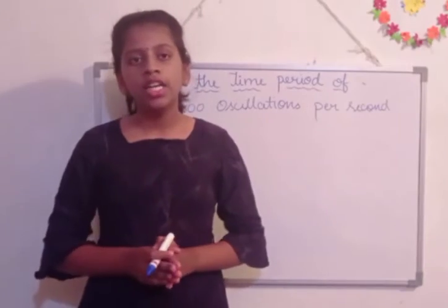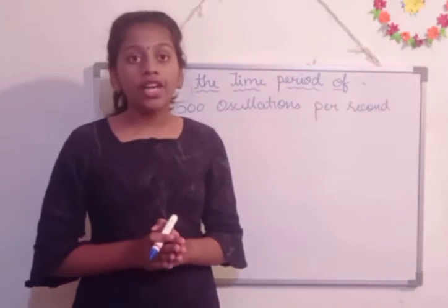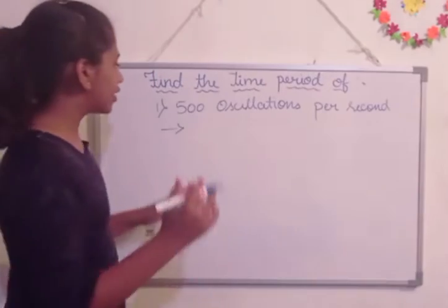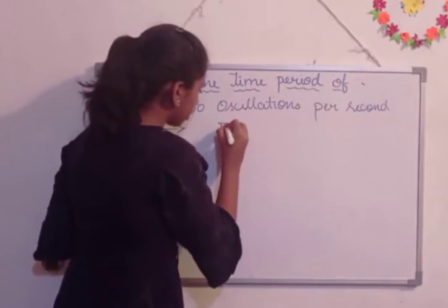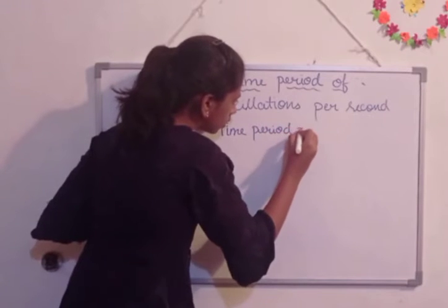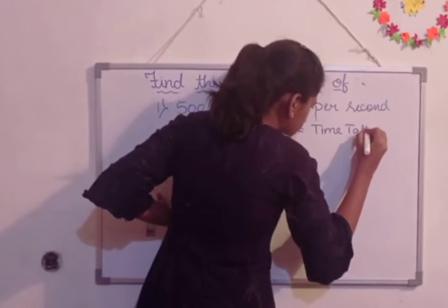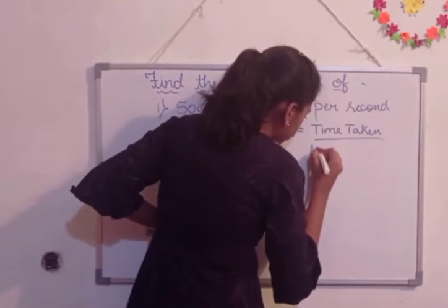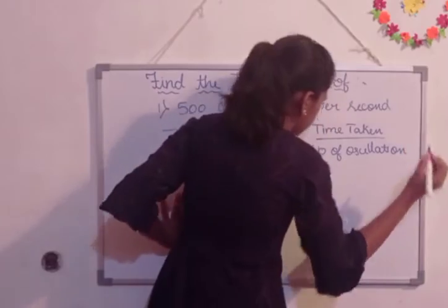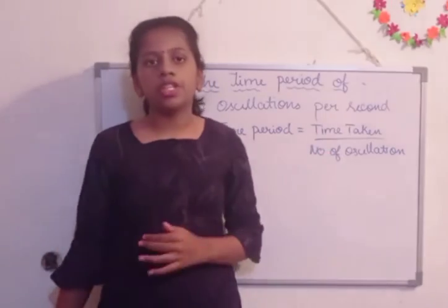Now let us find the time period of the first question: 500 oscillations per second. In one second, 500 oscillations have been completed. We are going to find how much time is required to complete one oscillation. The formula of time period is: Time Period = Time Taken divided by Number of Oscillations.